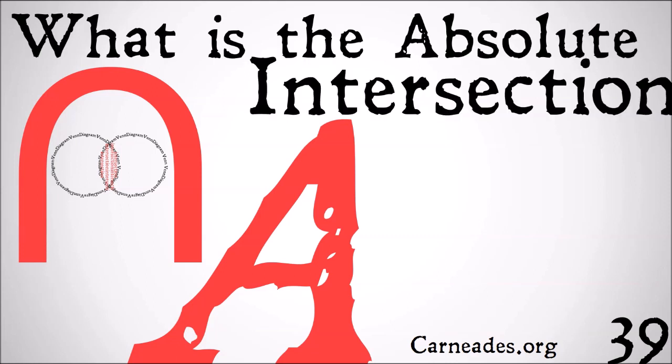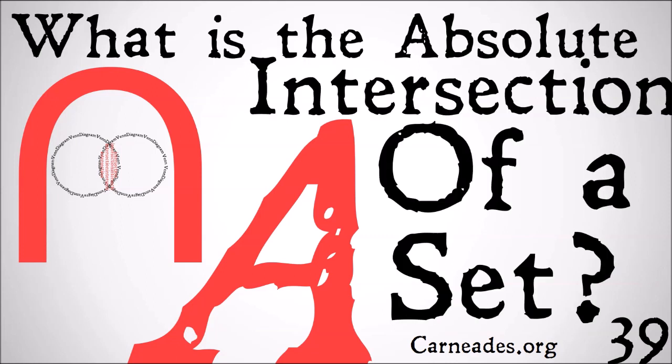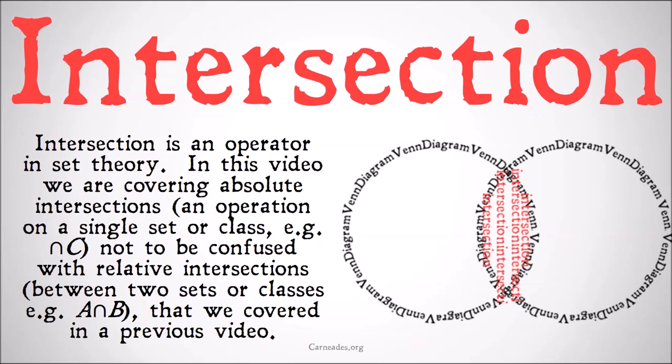In this video we're taking a look at what is the absolute intersection of a set. Intersection is an operator in set theory. We're covering what's known as an absolute intersection — an operation on a single set or class, for example the intersection of C — not to be confused with relative intersections between two sets or classes, for example the intersection of A and B, which we covered in a previous video. It's recommended to check that video out first.